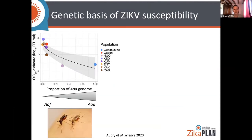To further investigate the genetic basis of this difference, we used two complementary approaches. In the first, we took advantage of natural hybrids between the two subspecies that occur in some parts of Africa, and measured the relationship between Zika virus susceptibility — expressed as the oral infectious dose 50%, the dose required to infect 50% of the mosquito population — as a function of the proportion of the Aedes aegypti aegypti genome in those hybrid populations. There is a negative relationship, meaning susceptibility increases as the proportion of Aedes aegypti aegypti genome increases.